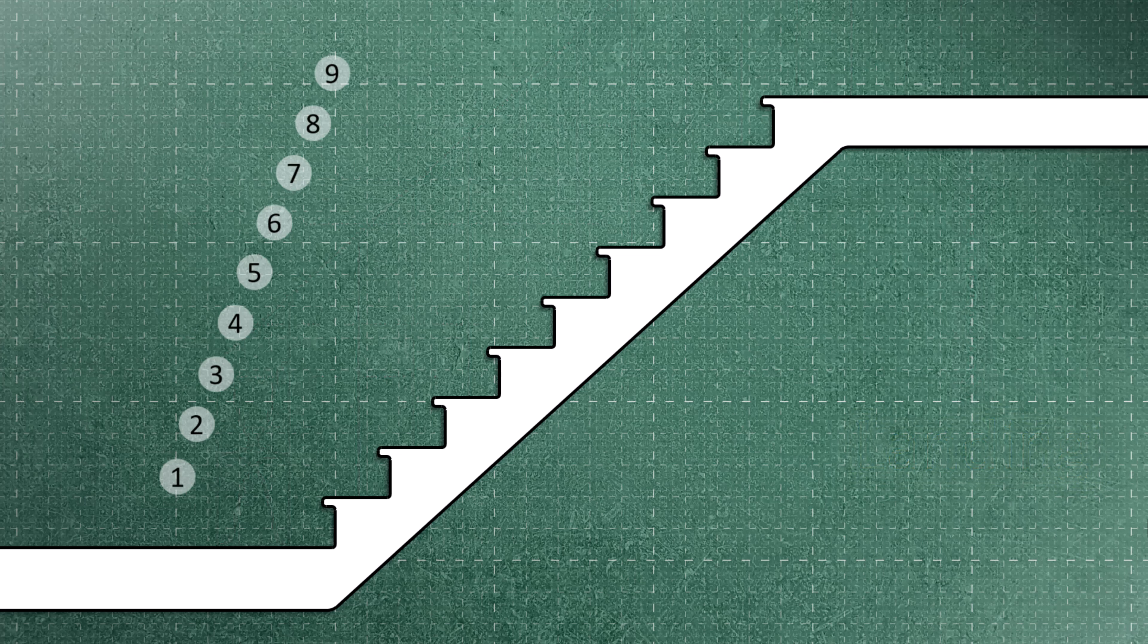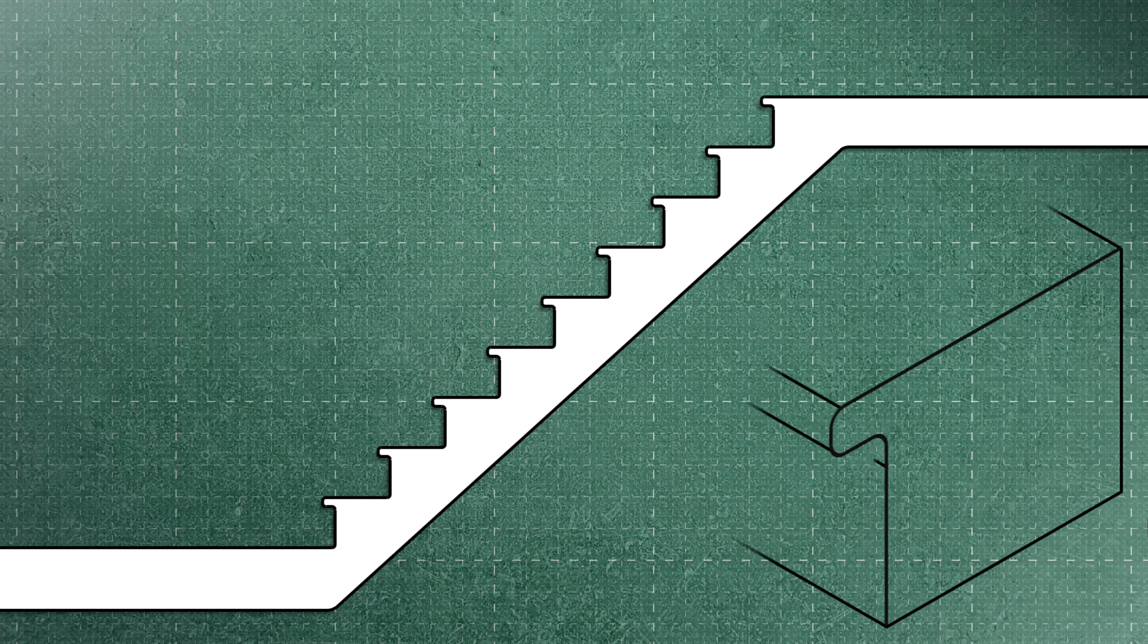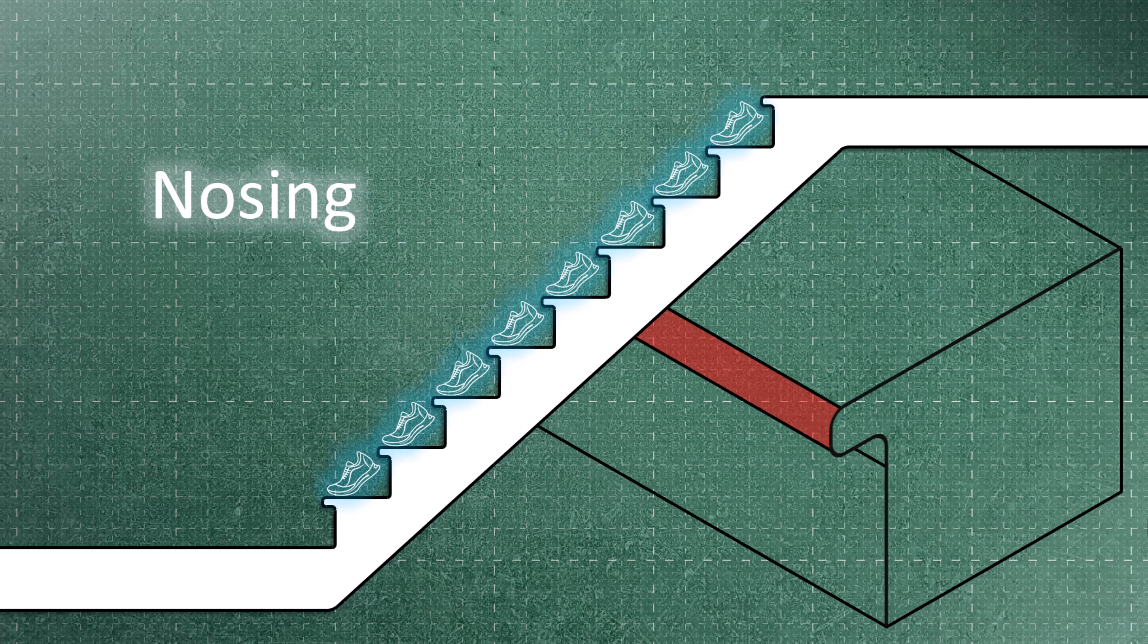As a professional architect, it is essential to assign a number to each step during the design process. When examining a step closely, you may notice that the upper part of the step slightly protrudes beyond the stair itself. This protruding part is known as the nosing, designed to prevent the back of the shoe from hitting the back of the stair while descending.